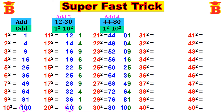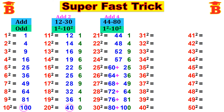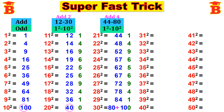Now add the tens place. 44 plus 0 is 44. 48 plus 0 is 48. 52 plus 0 is 52. 56 plus 1 is 57. 60 plus 2 is 62. 64 plus 3 is 67. 68 plus 4 is 72. 72 plus 6 is 78. 76 plus 8 is 84. 80 plus 10 is 90.